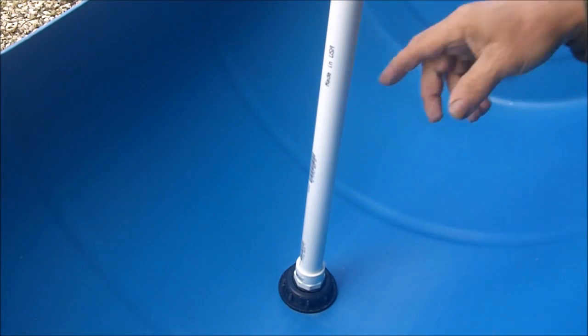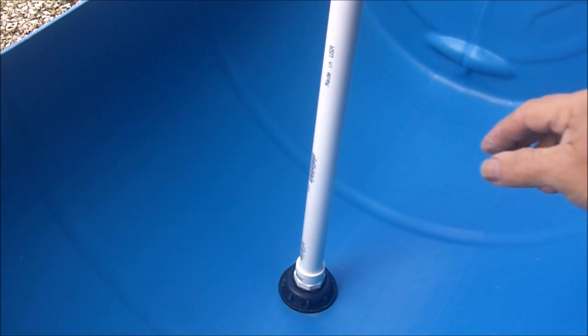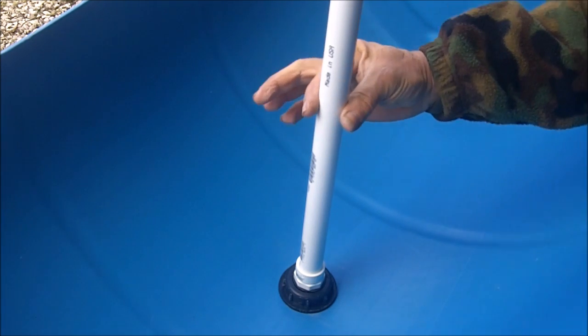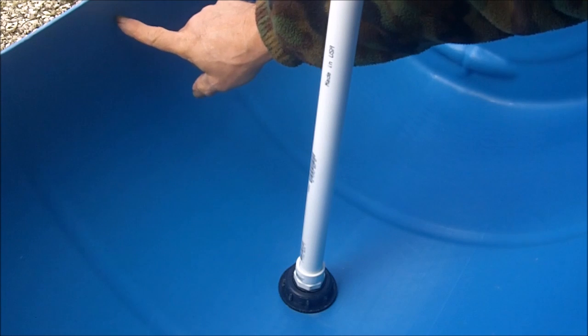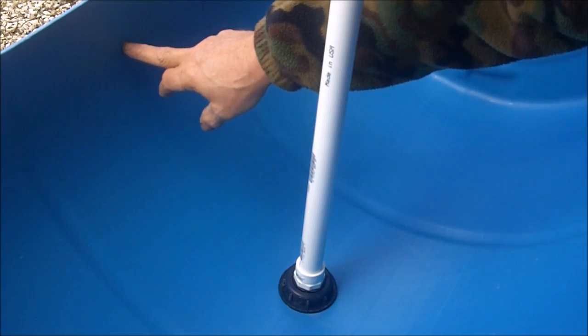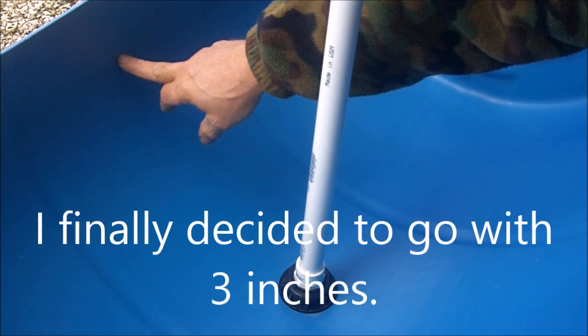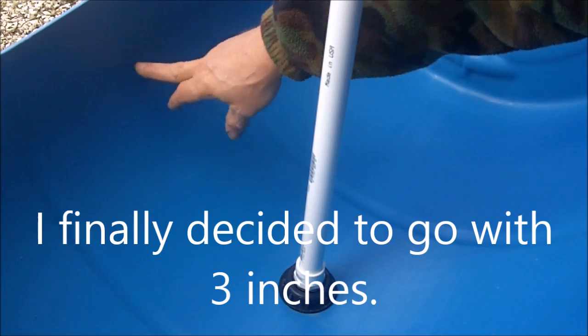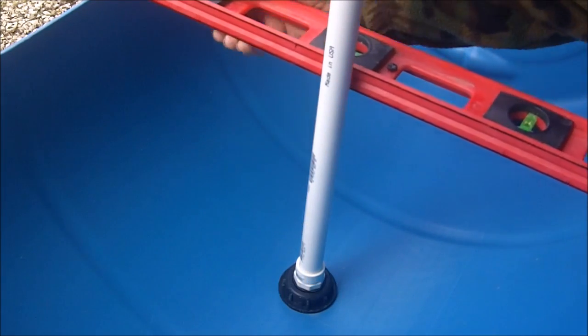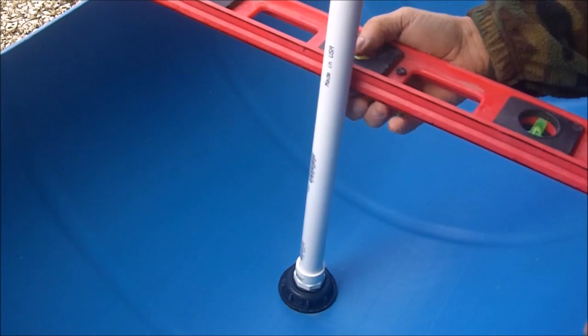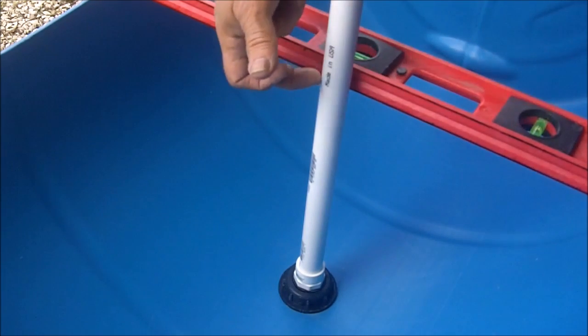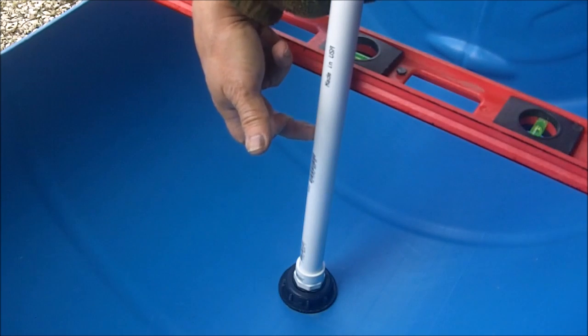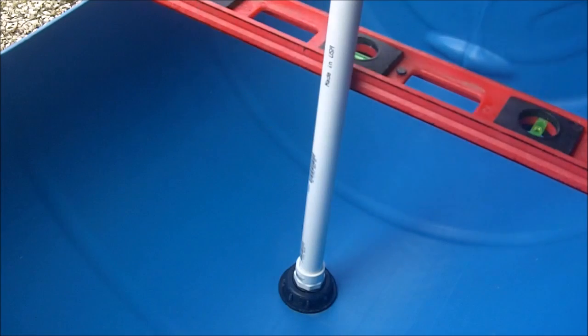This pipe is going to be my siphon pipe. The top of this pipe is going to determine the water level when this fills up. I want the water level to be about two inches from the top here. I'm going to make a mark at the very top of the container, then measure two inches below that mark. That's where I'm going to cut it off, and it will maintain the water level at two inches beneath the edge.